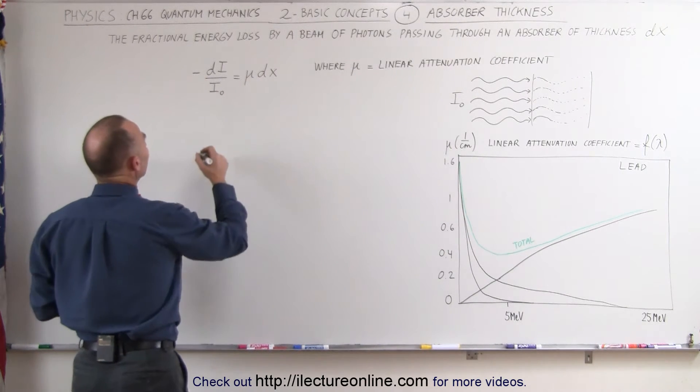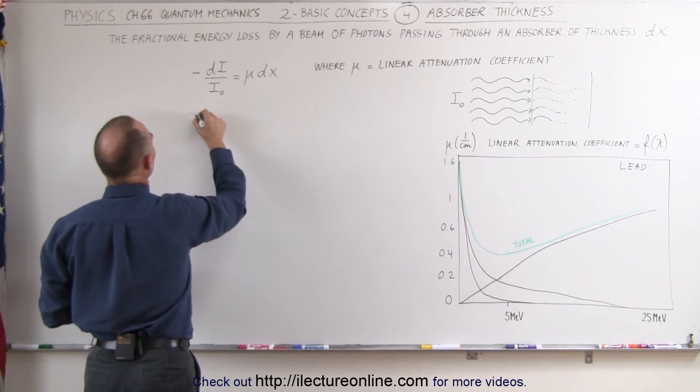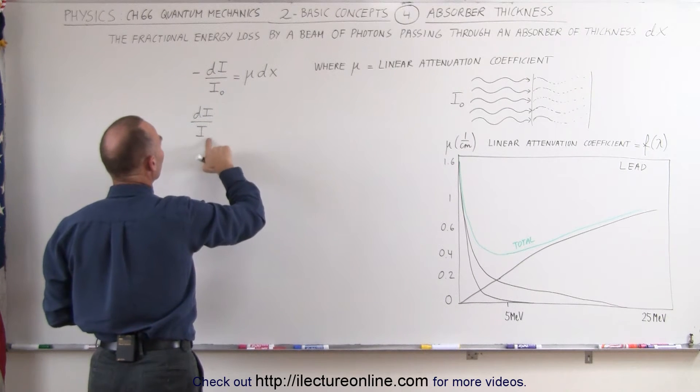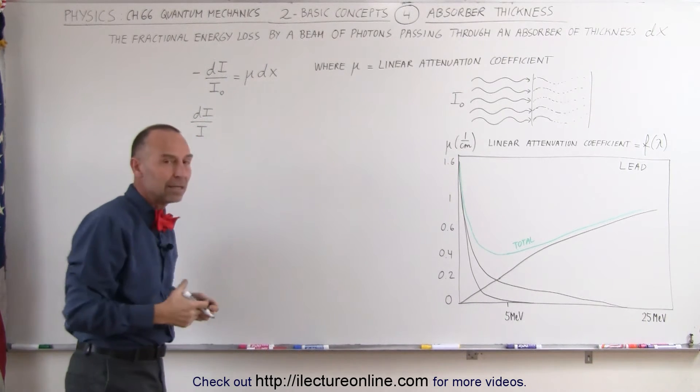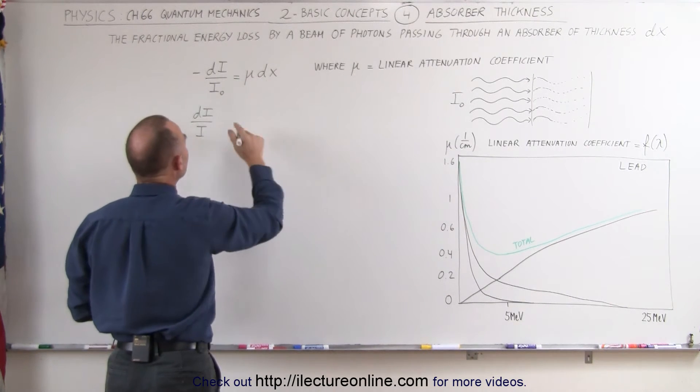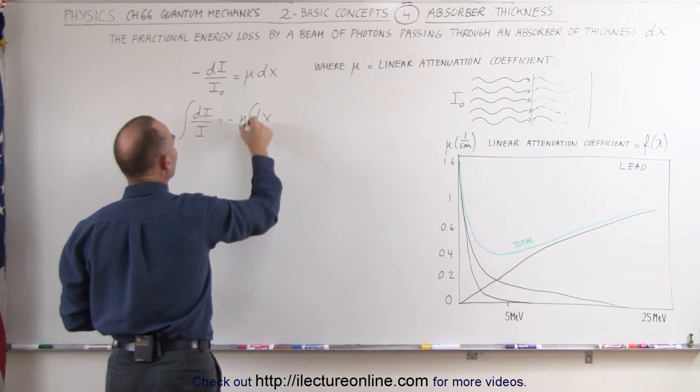If we now integrate both sides, let's see if we can do that. If we put the negative on the other side, we can write this as dI over I. I would be the variable, the intensity of the incoming beam, is going to be equal to minus μ times dx, and now we can integrate both sides.